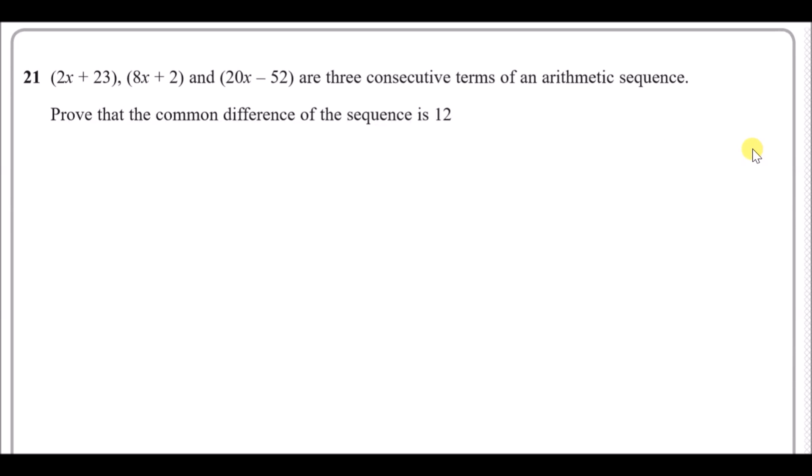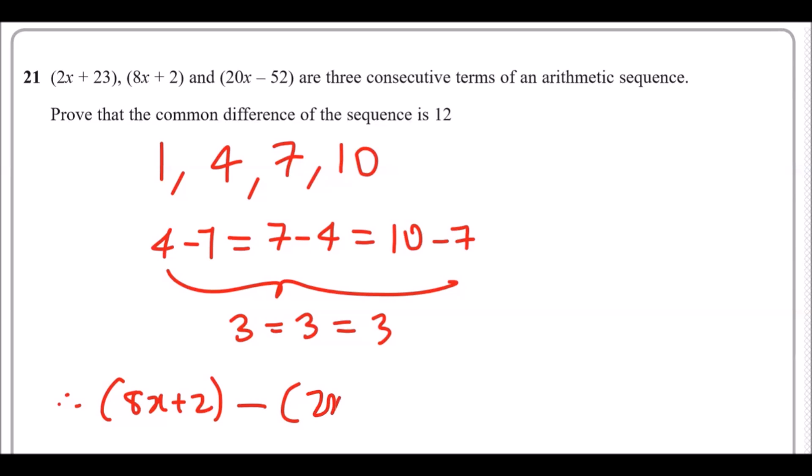Now to prove it, there's a nice trick here. You could say that the difference of these two terms must equal the difference of the next two terms. That makes sense, because if you had something like 1, 4, 7, 10, we could see that the common difference is 3. Now if you subtract each one, so 4 take away 1 must equal 7 take away 4, which must equal 10 take away 7, which is all 3 each. So what we want to do here, algebraically, is subtract the common differences. So let's do 8x plus 2 minus the first term, so 8x plus 2 minus 2x plus 23. And it has to equal the difference of the other side, so 20x minus 8x plus 2.